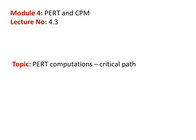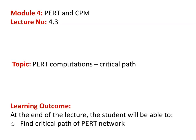This is lecture number 4.3 in PERT/CPM. In the earlier two lectures, we studied about the construction of the PERT network and the calculation of the various times and variance for the network. In this lecture, we continue with the PERT computation. We will be using the forward pass computation, backward pass computation, and we will find the critical path. The learning outcome: at the end of the lecture, the student will be able to find the critical path of the PERT network.